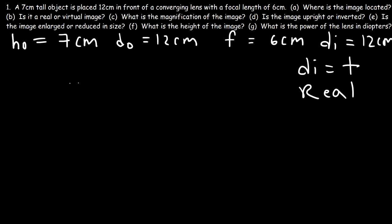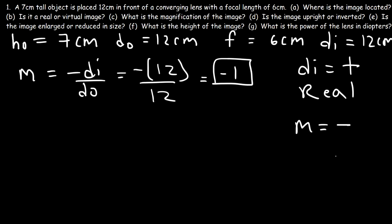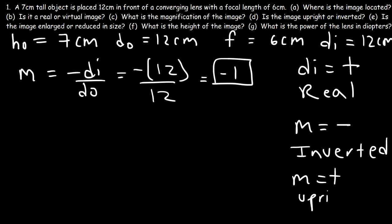What is the magnification of the image? The magnification is HI divided by HO, and it's also equal to negative DI divided by DO. DI is positive 12 and DO is 12, so negative 12 divided by 12 is negative 1. Because the magnification is negative, the image is inverted. If the magnification were positive, the image would be upright, in the same direction as the object.